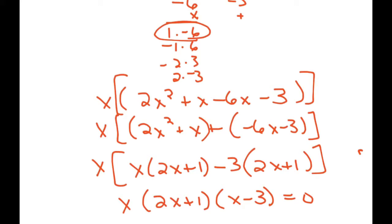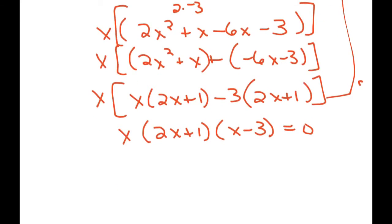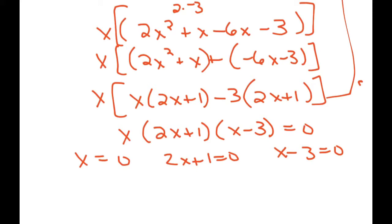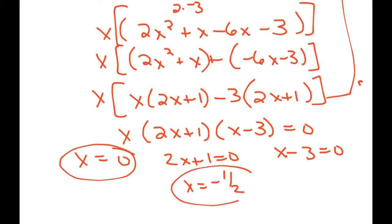The book skips this — it assumes you know how to factor trinomials where the leading coefficient is not 1. I do not assume that. I use the zero product property. Notice that the x at the beginning also gets set equal to zero — people have been forgetting that, so don't forget that. So this is one of the solutions. Negative one half is one of the solutions, and 3 is one of the solutions.